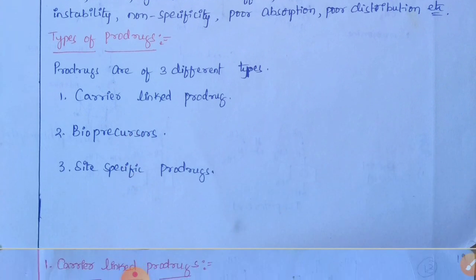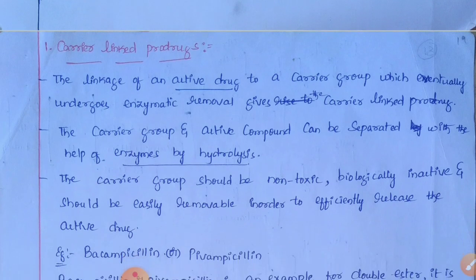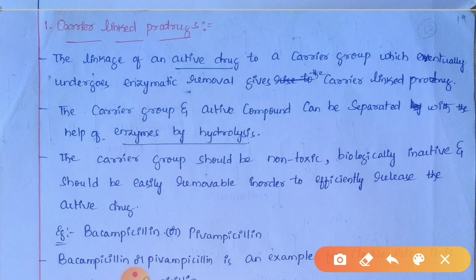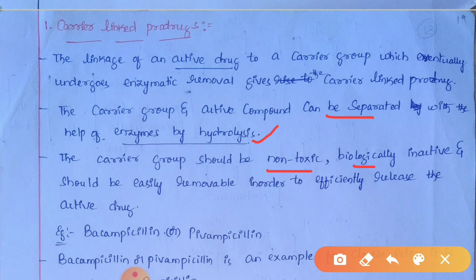Prodrug is of three types: carrier-linked prodrug, bioprecursor, and site-specific prodrug. The carrier-linked prodrug involves the linkage of an active drug to a carrier group which eventually undergoes enzymatic removal. When it enters into the body, the carrier can be easily separated by enzymes with the help of hydrolysis. The carrier group has certain properties: it should be non-toxic, biologically inactive, and easily removable in order to efficiently release the active form of the drug.